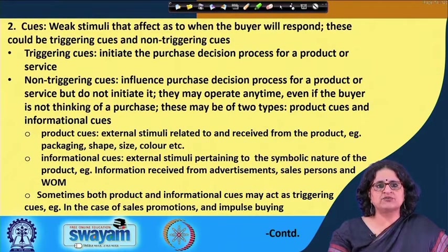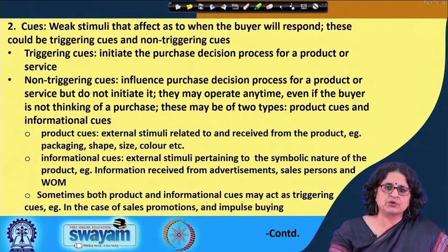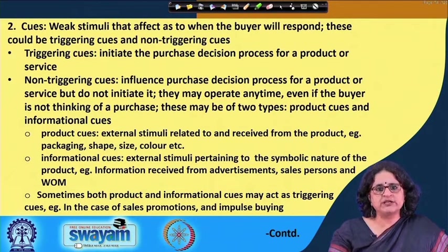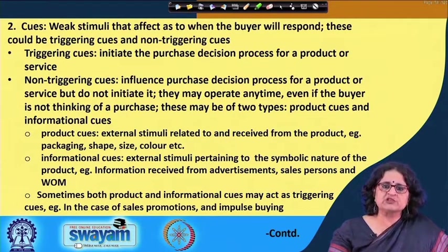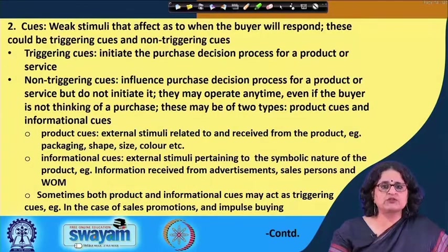The second kind of non-triggering cues are informational cues — external stimuli pertaining to the symbolic nature of the product. They do not pertain to the product features or attributes as such, but rather to the symbolic nature of the product. For example, information received from advertisements, from salespersons, or from word-of-mouth. These become very symbolic in nature and are typically more to do with the symbolic nature of the product.